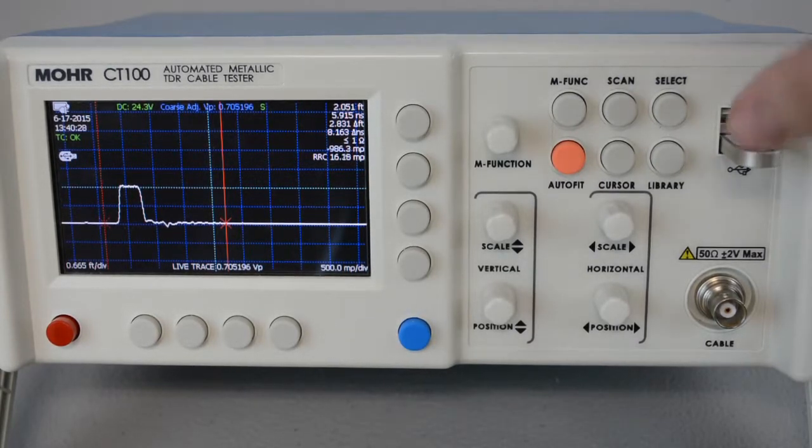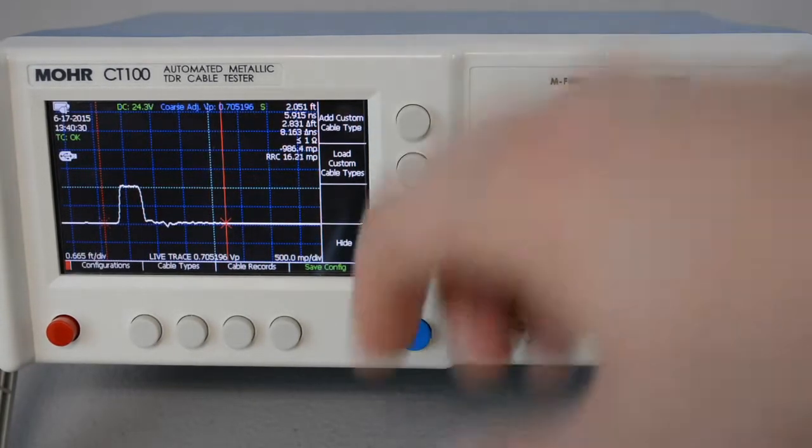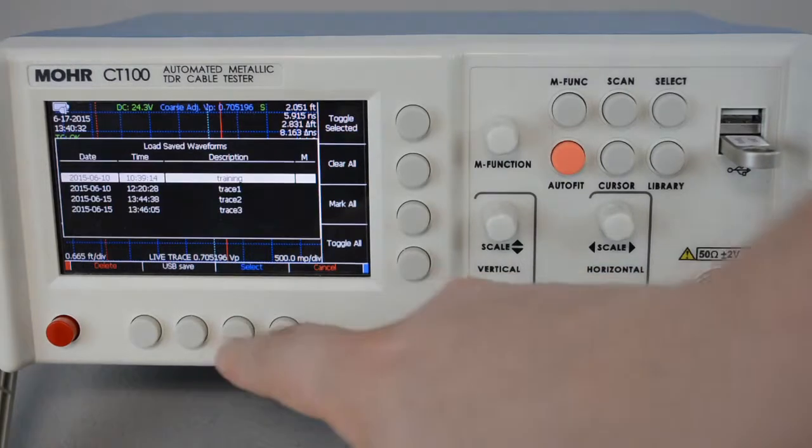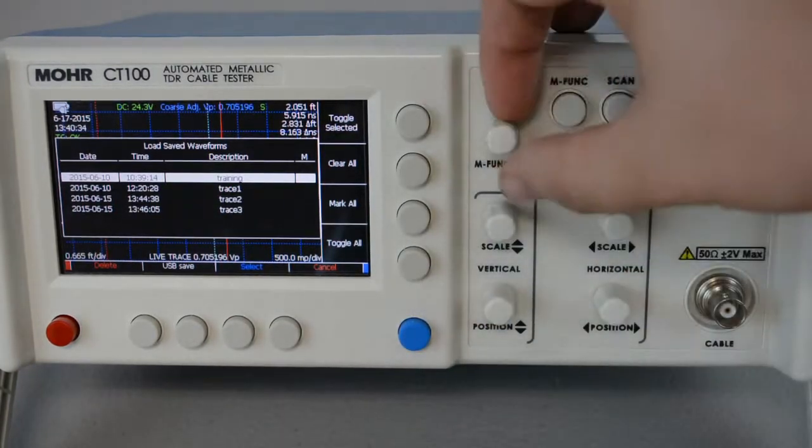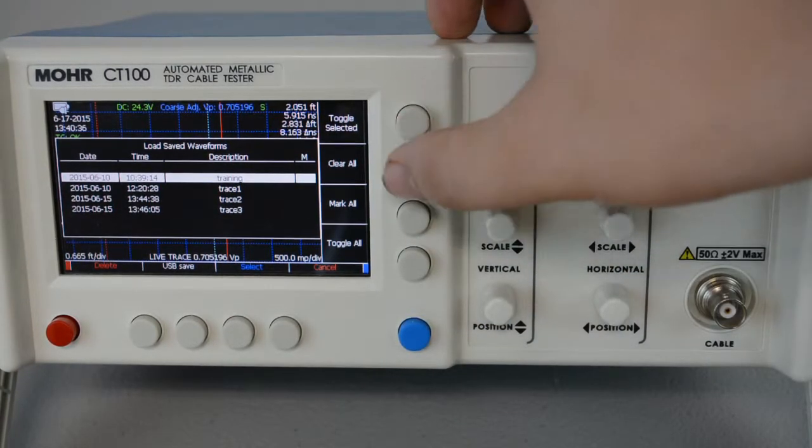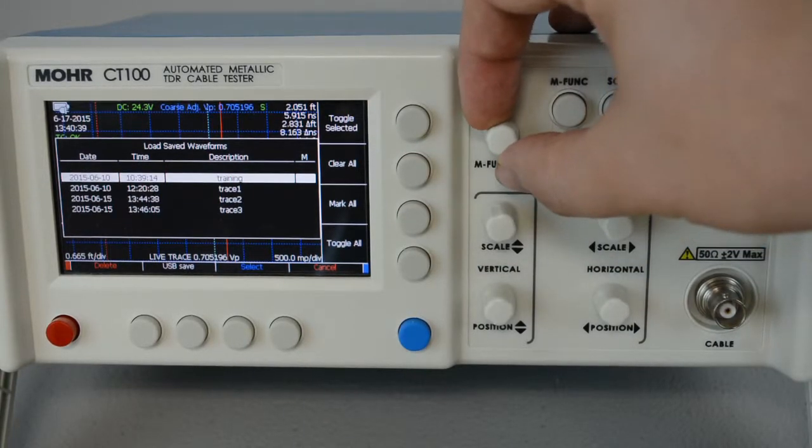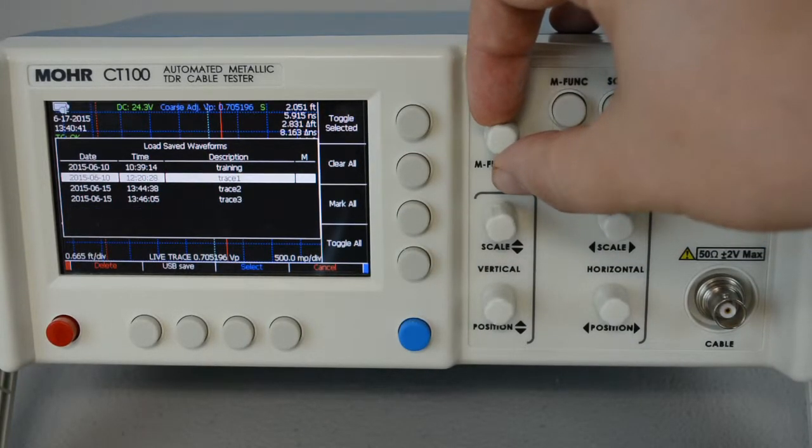Once it's plugged in, press library, cable records, and use the multifunction knob and the select buttons to select which traces you want to export.